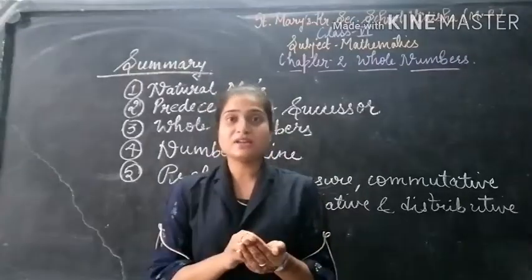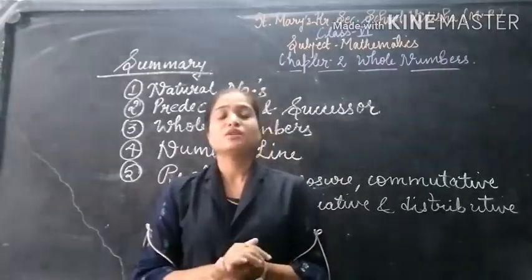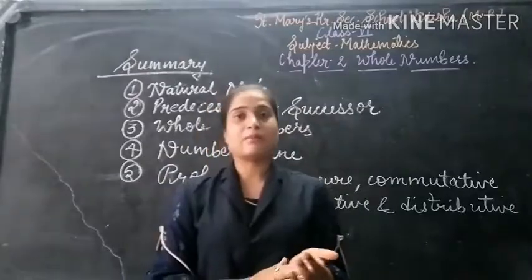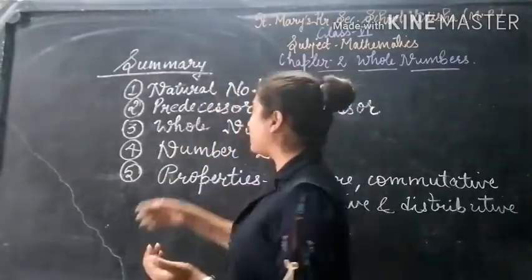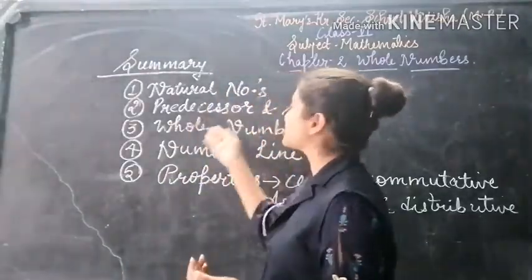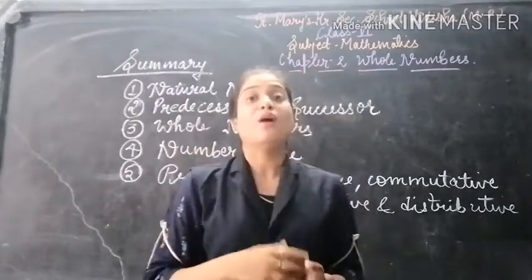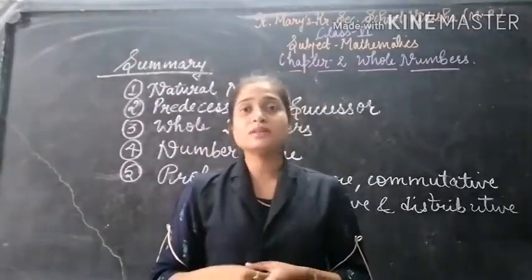And every natural number has a successor. This is what we can say about predecessors and successors. After predecessors and successors, we studied whole numbers.